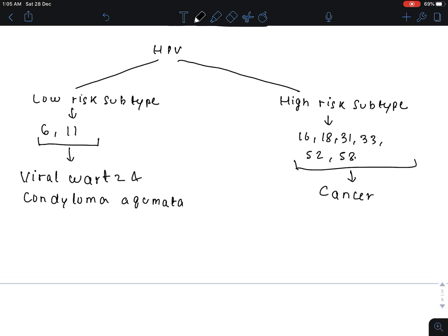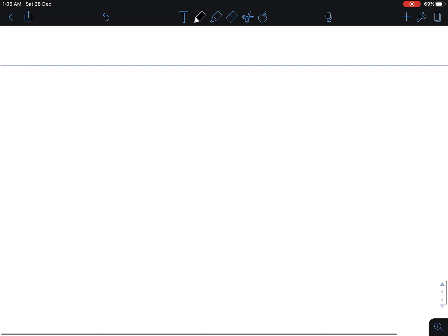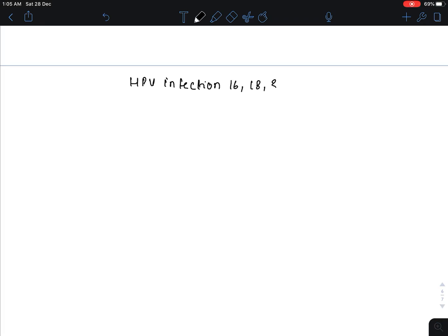Now we will see the pathogenesis. HPV infection subtypes 16, 18, 31, 33, 52, 58 produce malignancy by producing E6 protein and E7 protein. E6 protein decreases the activity of P53 gene, therefore increasing telomerase enzyme activity.